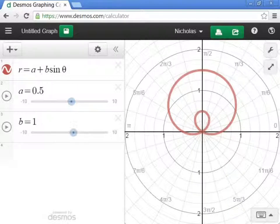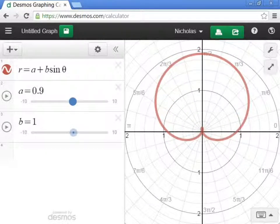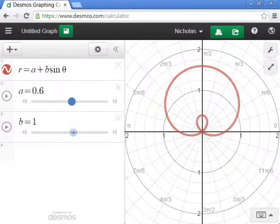Now, that loop is only there when A and B, when you divide them, you get a value that's less than 1 but greater than 0. So right here, it just has to be between 0 and 1. So as soon as we get to 1, we lose the loop. But if we go less than 1, then we have the loop.